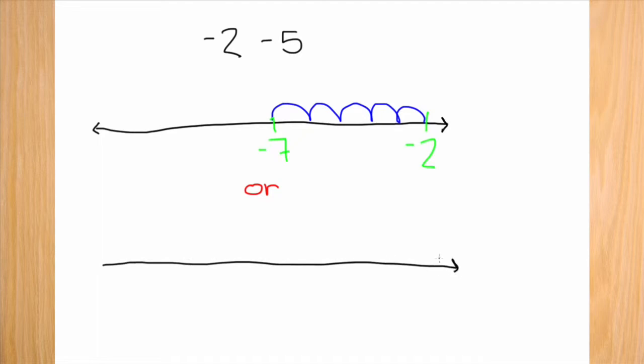You can do this method a different way. Again, draw your number line and mark the negative two. Now instead of jumping five individual spaces, just jump one big one. If you finished this problem correctly, you should have got the answer negative seven.